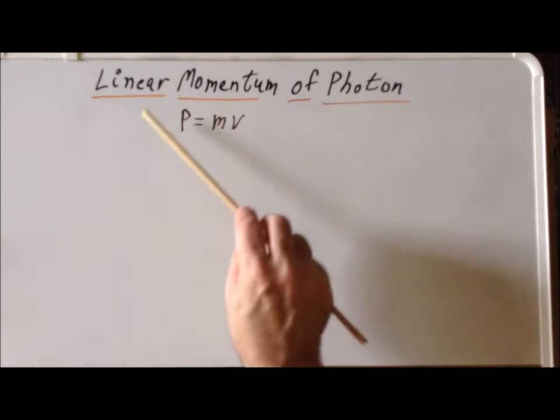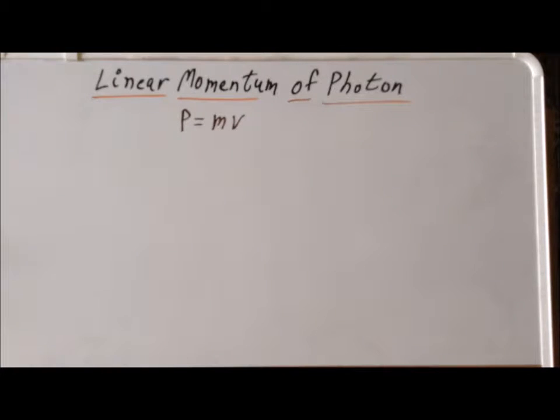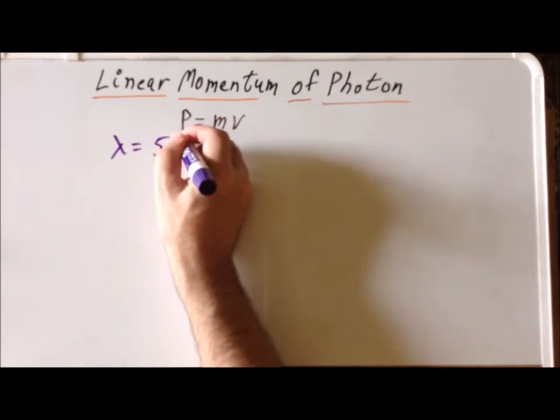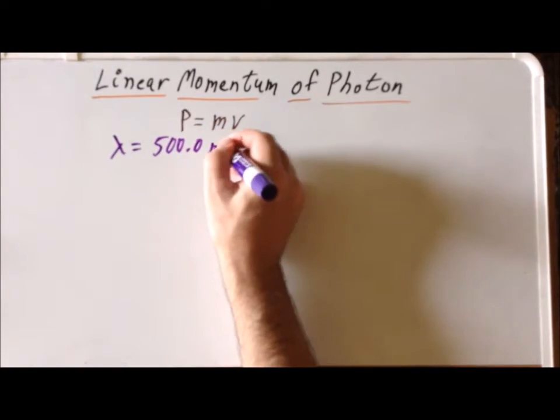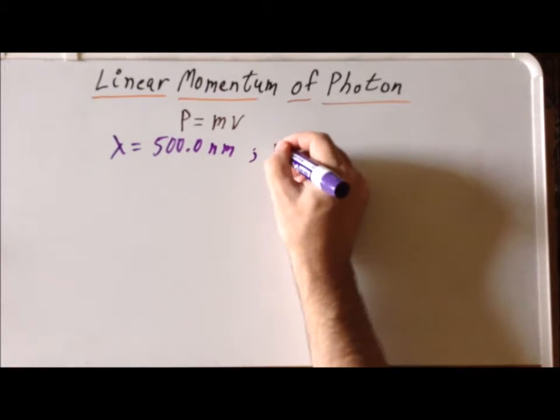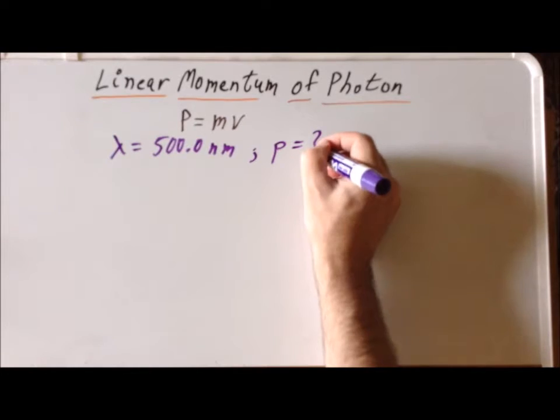So if we were to naively use the classical expression for momentum, we would conclude incorrectly that the momentum of a photon was zero. And it turns out that is not true. So let's suppose that we have a photon that has a wavelength of 500 nanometers, and what we want to do is to compute the momentum of this particular photon.